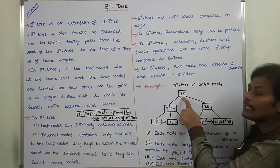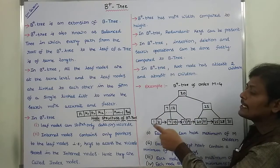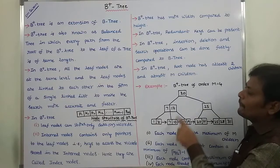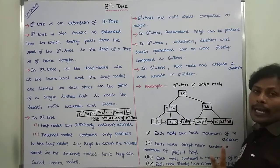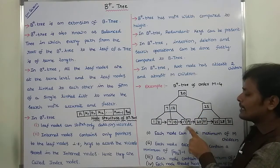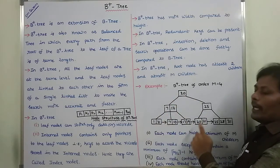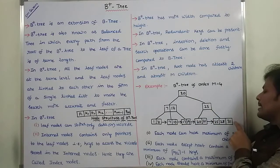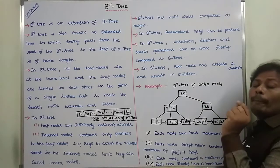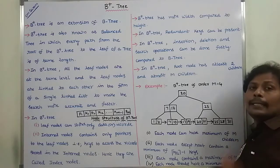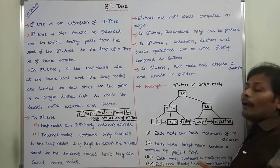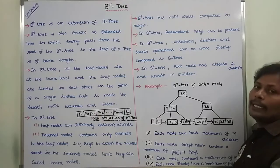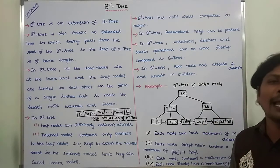For example, this is the root node 20 and this is a leaf node. The distance between them is 2 edges. Similarly, the distance between other leaf nodes and the root node is also 2 edges each. B plus tree is a balanced search tree because every path from the root to the leaf has the same length. Hence, we can say that B plus tree is a balanced tree.